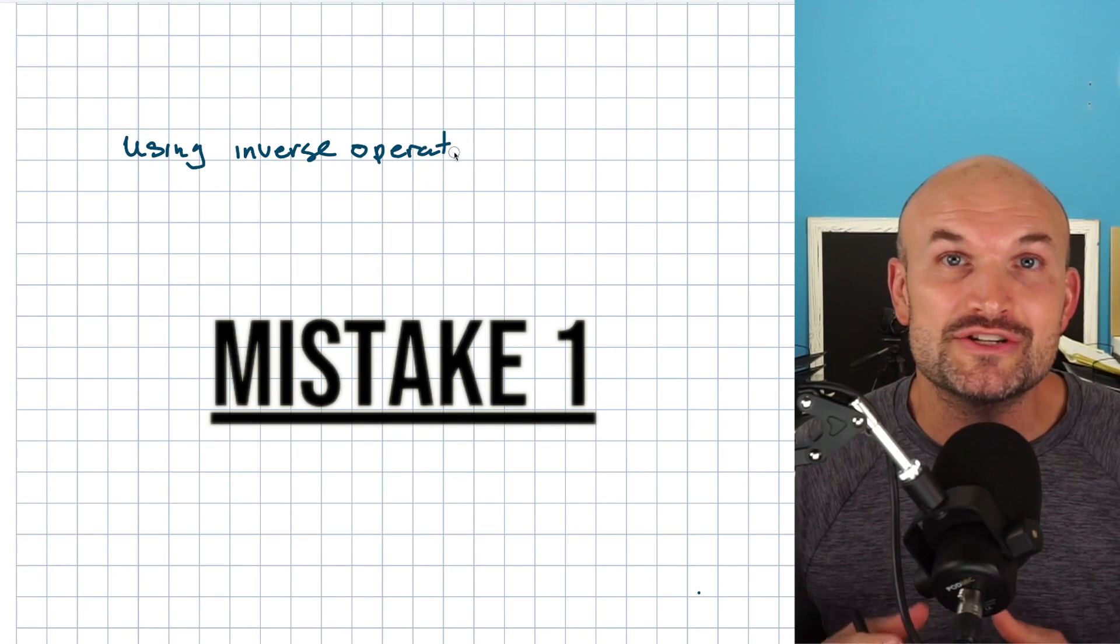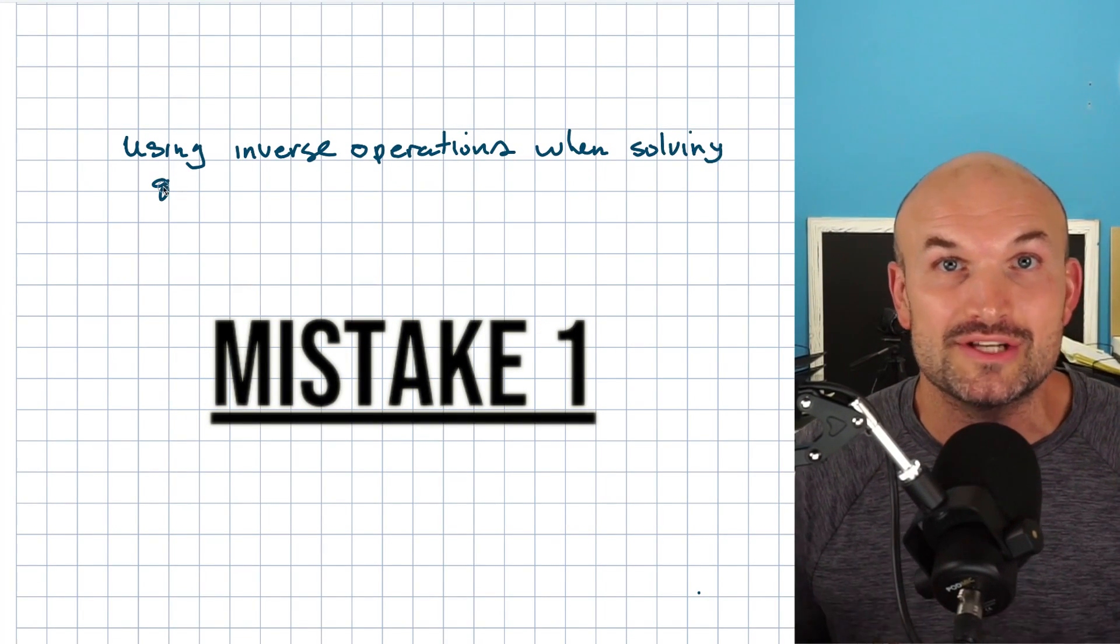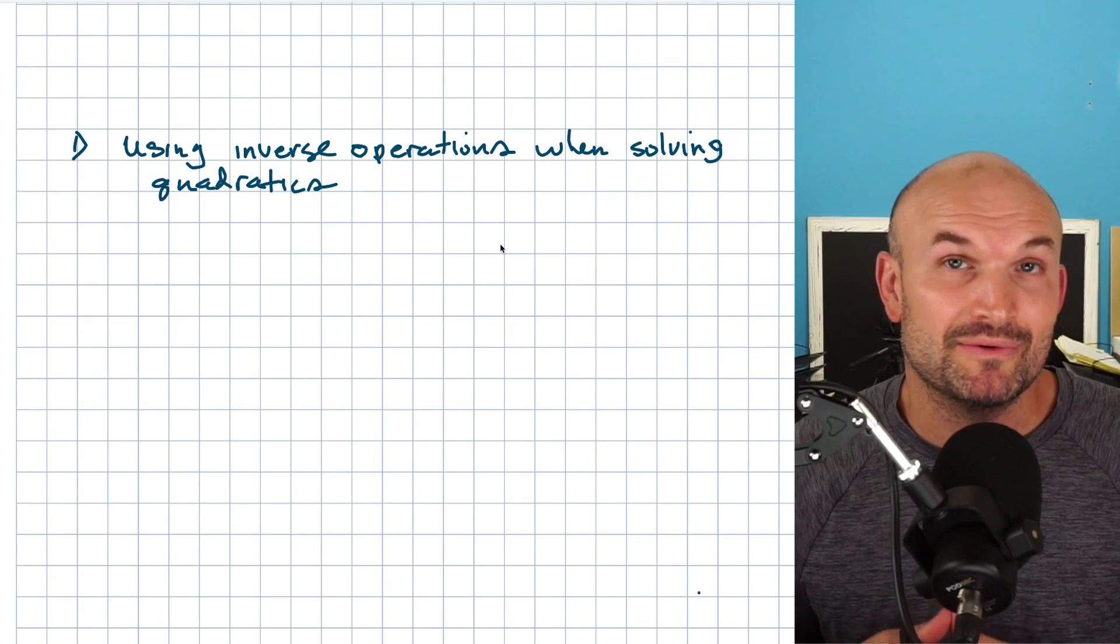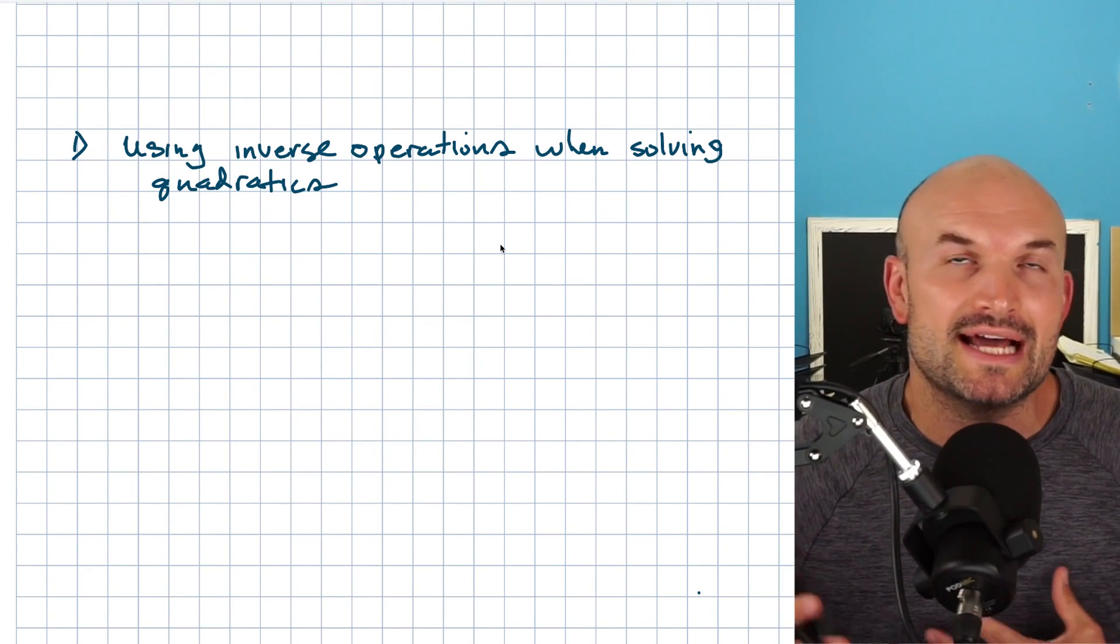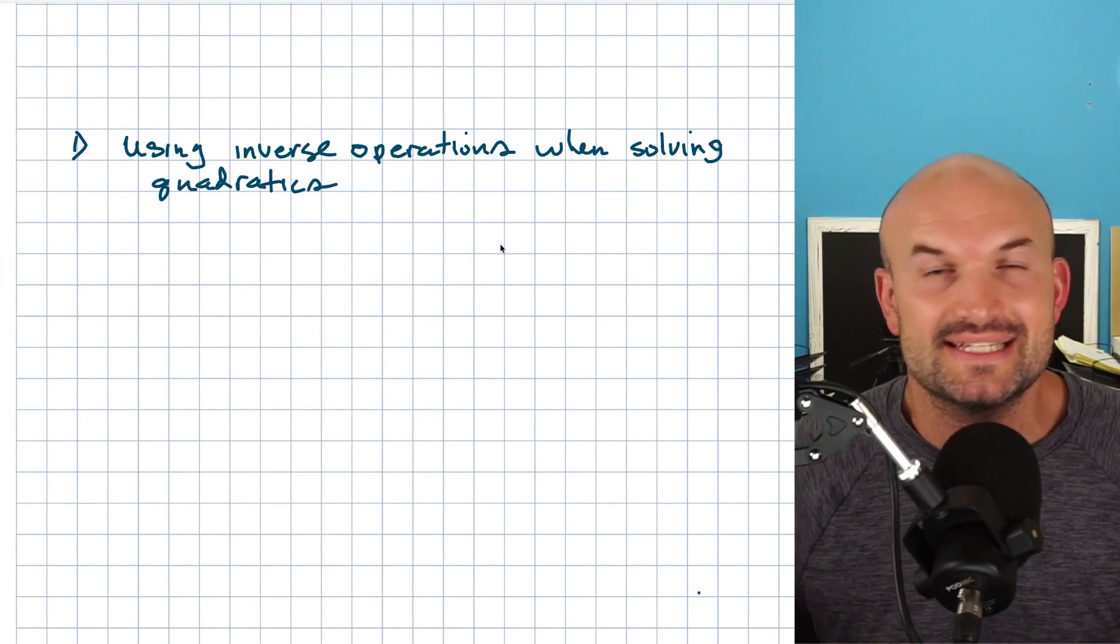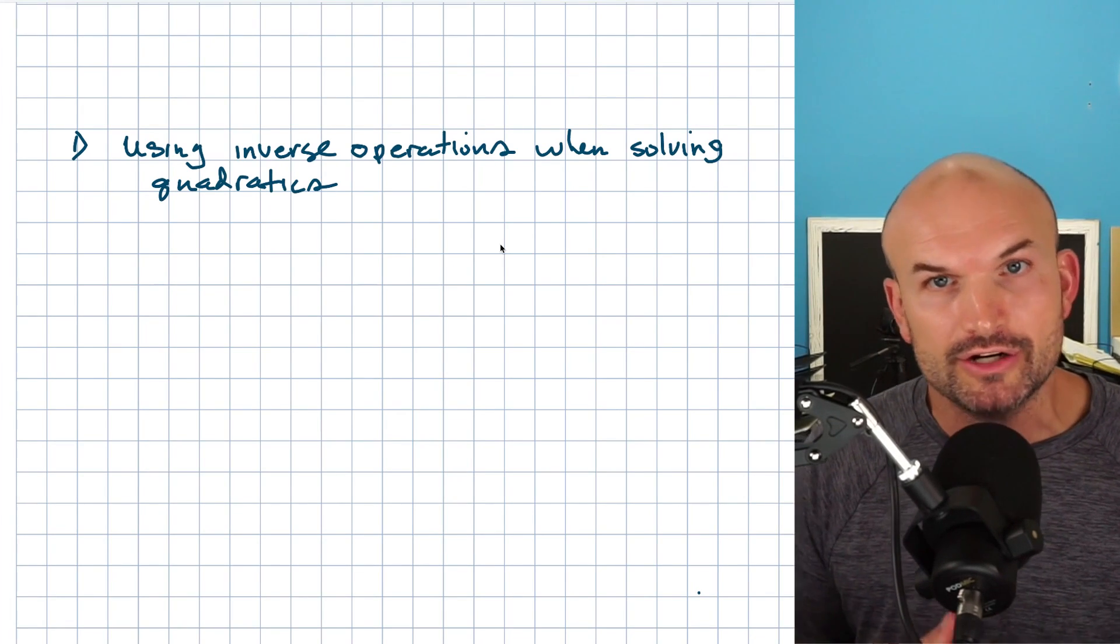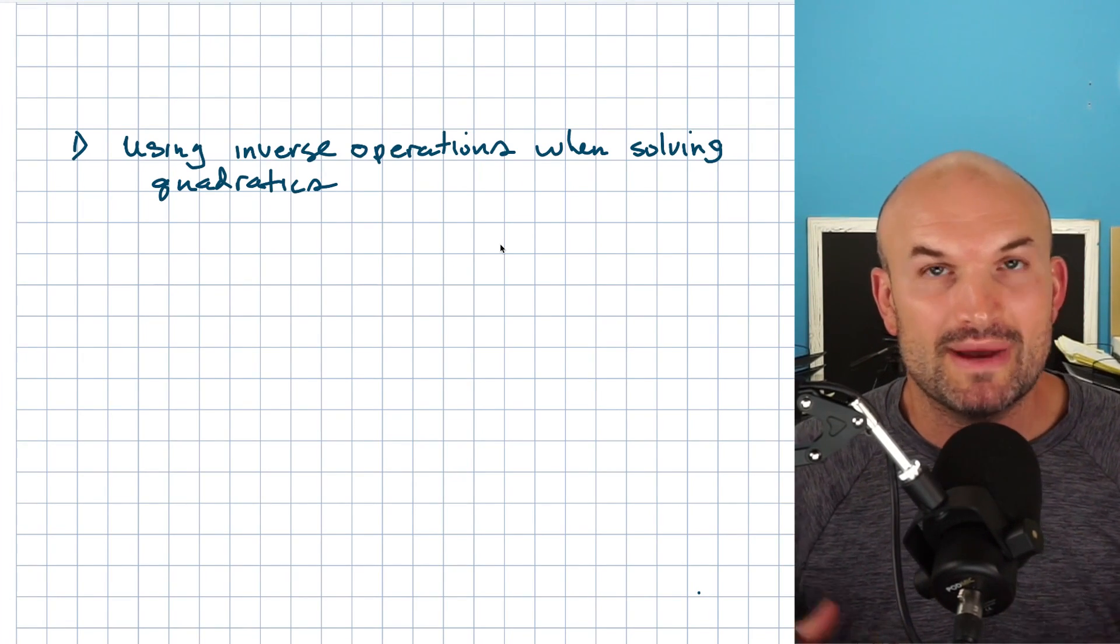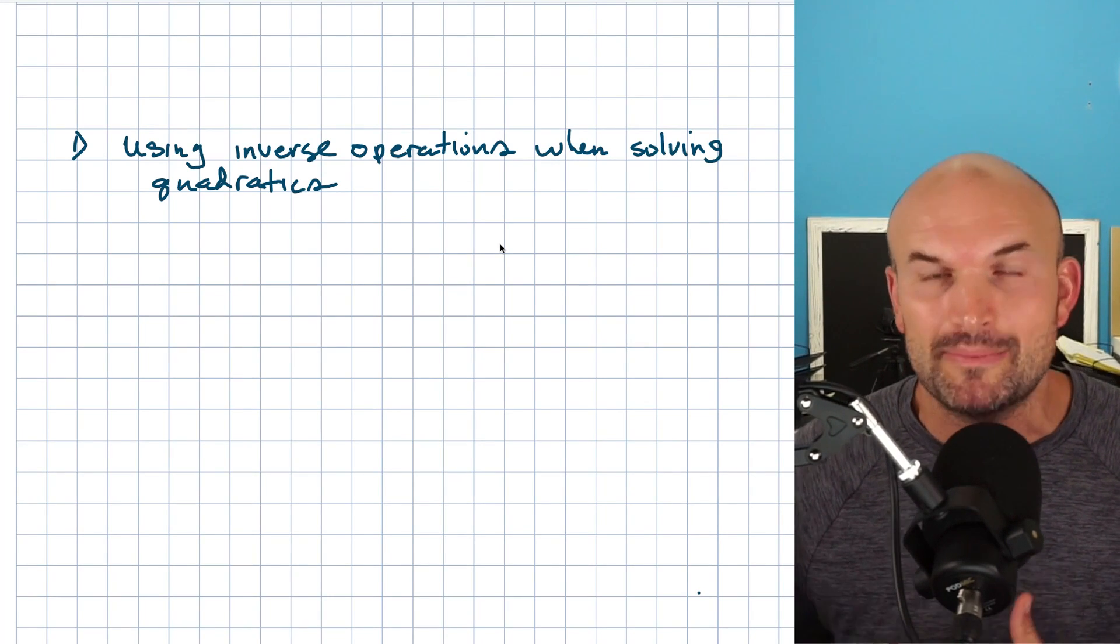The first mistake I see students make is always trying to use inverse operations when solving quadratics. So this is a really big common one, especially when students are first learning how to solve quadratics. And it makes sense because when we learn how to solve linear equations, what do we do? We do inverse operations.